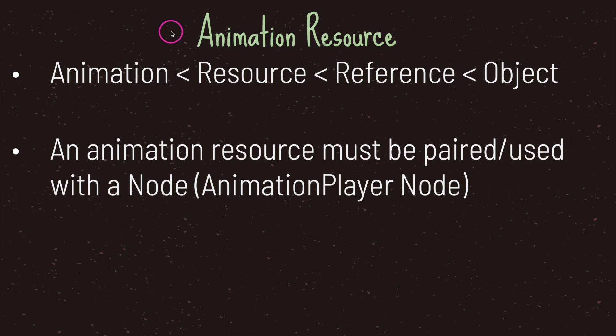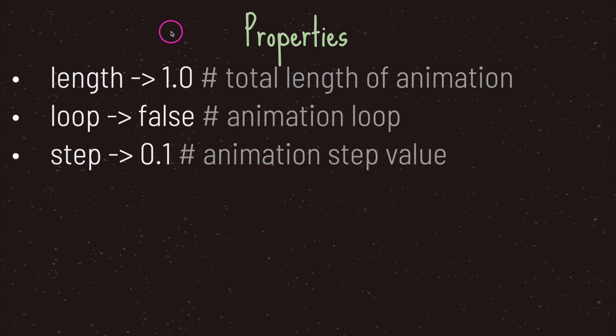The animation resource must be used with a node that can take advantage of its capabilities — for example the animation player node, which is a node that can be attached onto the scene tree. The animation resource class provides you with three properties: length, loop, and step.